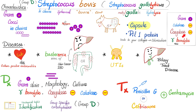Streptococcus bovis is gram-positive, catalase-negative, coagulase-negative, gamma-hemolytic. How do you diagnose it? Gram stain, morphology, and culture — gamma hemolysis means no hemolysis. Identification uses biochemical tests to detect group D. You treat with penicillin G plus gentamicin, or ceftriaxone plus gentamicin — again, a cell wall synthesis inhibitor plus gentamicin. Ceftriaxone can kill Streptococcus bovis.